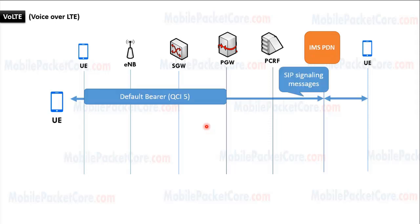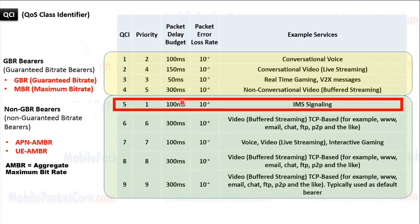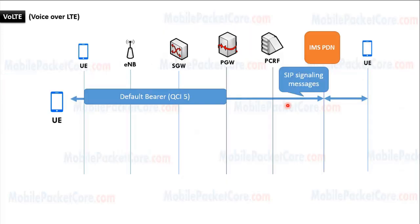In order to establish the voice call, first the UE will create a default EPS bearer that will connect the UE to IMS PDN. This default EPS bearer will be assigned a quality of service profile, and the QCI value in this quality of service profile will be QCI5. As we learned before, the QCI can be from 1 to 9, and from this table we can see that QCI5 is suitable for IMS signaling. This default EPS bearer with QCI5 will be used to pass SIP signaling messages between the UE and the IMS network.